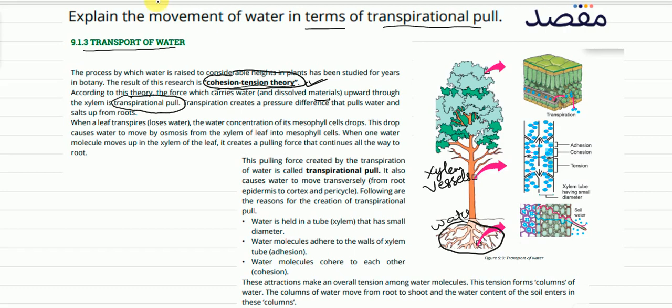Transpiration creates a pressure difference that pulls water and dissolved materials up from the roots. When transpiration occurs in the leaves, water vapors are released, creating a pulling force that draws water upward from the roots through the plant.